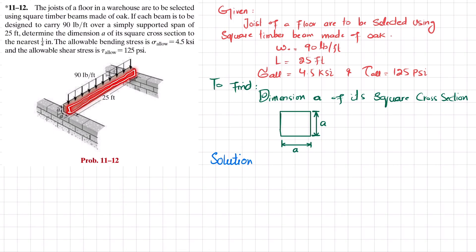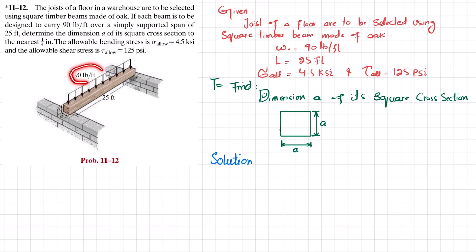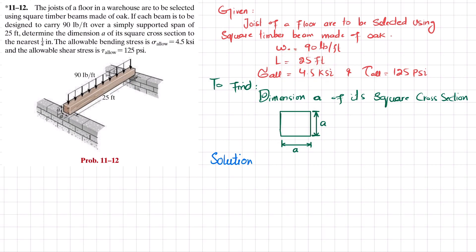Floor joists are horizontal members that span over open space between beams and transfer vertical loads. This joist is selected as square in cross section and made of wood, that is oak. The loading is a distributed load over a span of 25 feet. We have to find the dimension of this square cross section. All the data has been mentioned, so let's start with the solution.